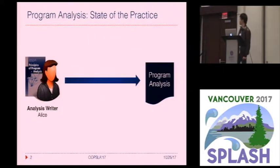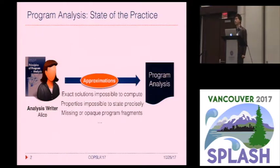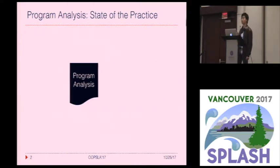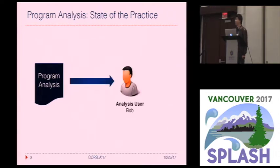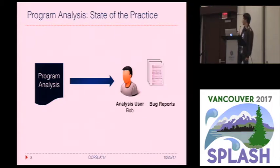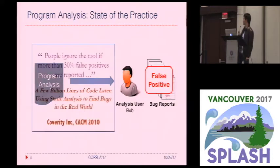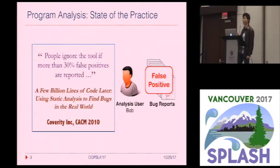When Alice writes the analysis, because of various reasons, she actually applies approximations. Let's say this analysis finds program errors or bugs, and it is shipped to an end user, say Bob. When Bob applies this analysis on his program, the approximations that Alice applied will inevitably result in false alarms. And when there are too many false positives, Bob will simply stop using the tool.